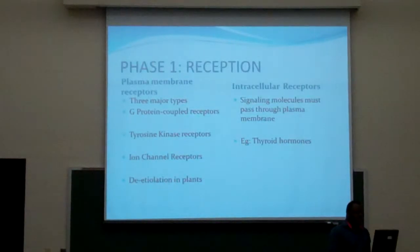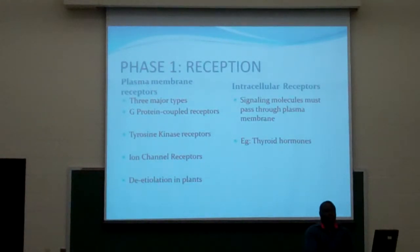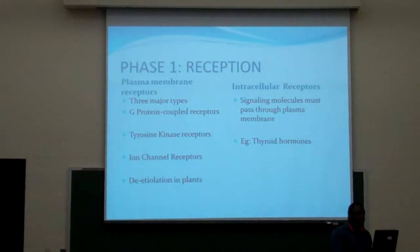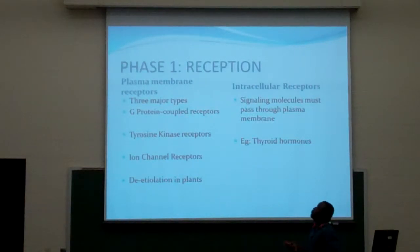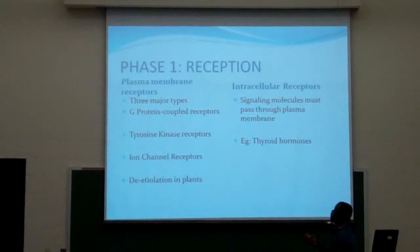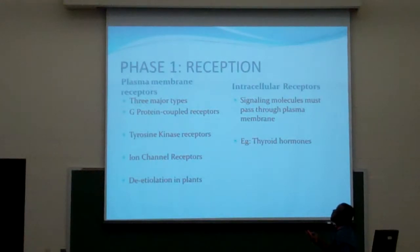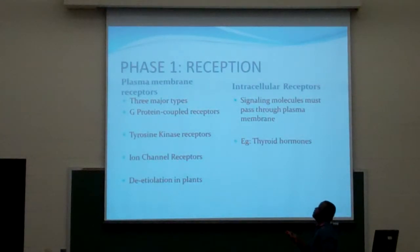Phase one of the cell signaling process is reception. If you read the types of receptors in the reception stage, we have the G-protein coupled receptors, the tyrosine kinase receptors, and the ion channel receptors.